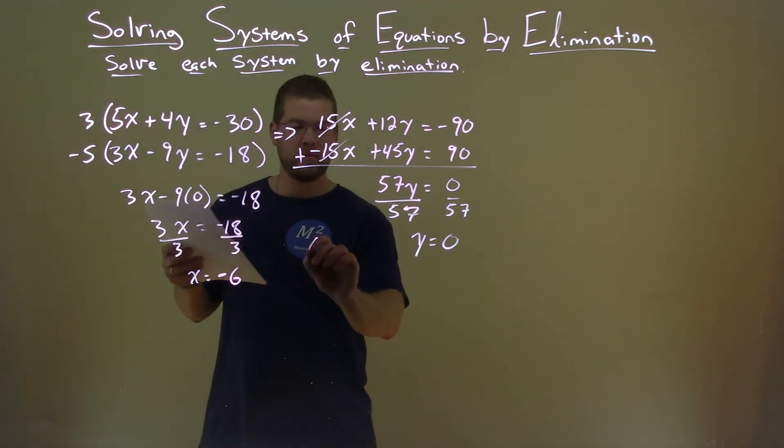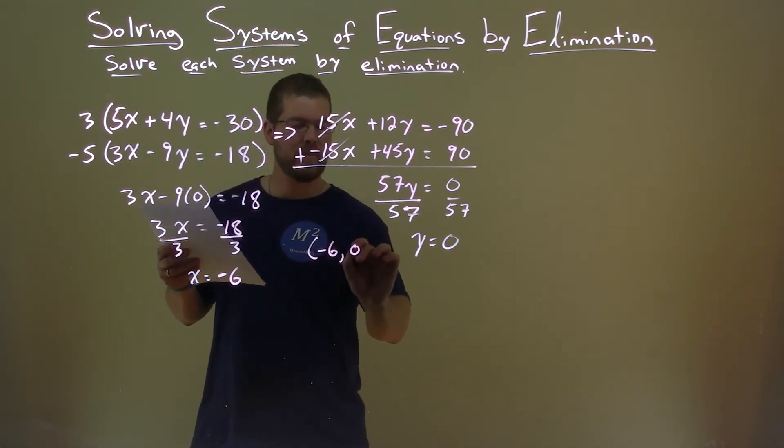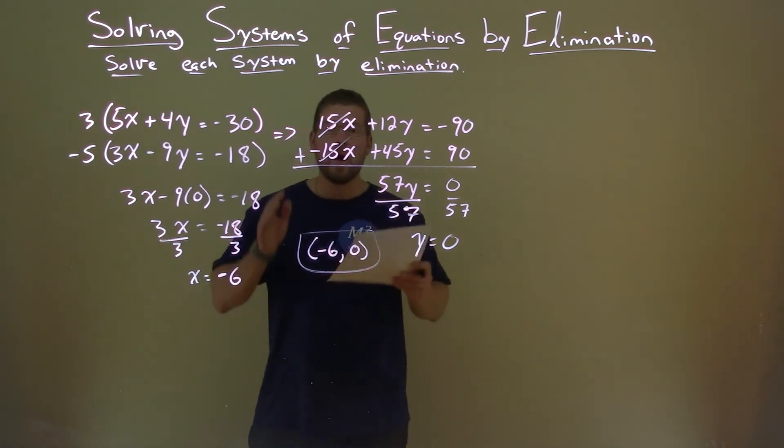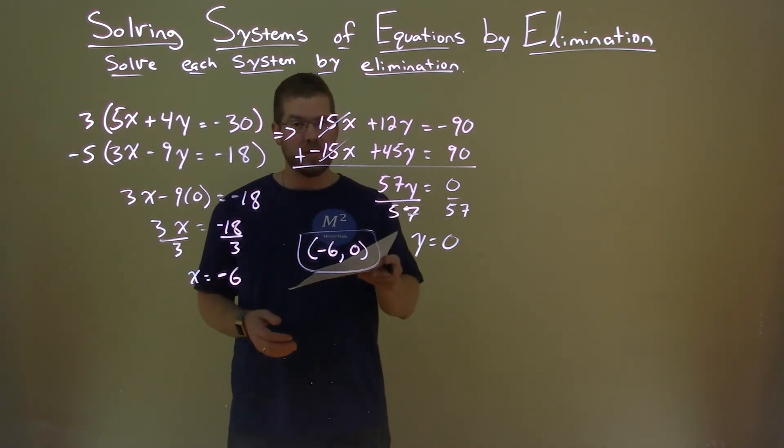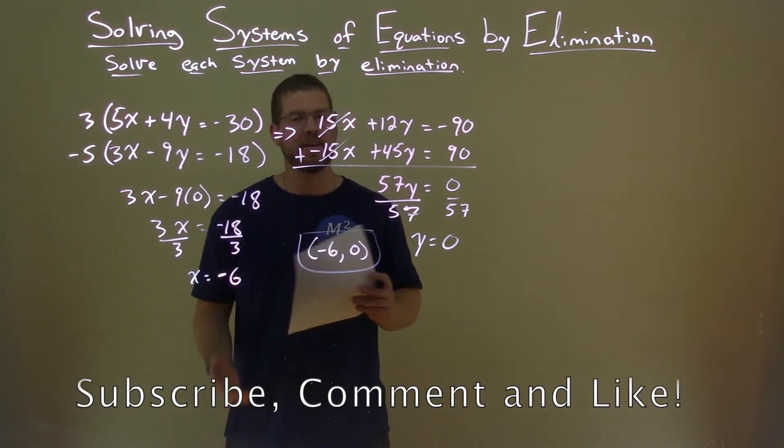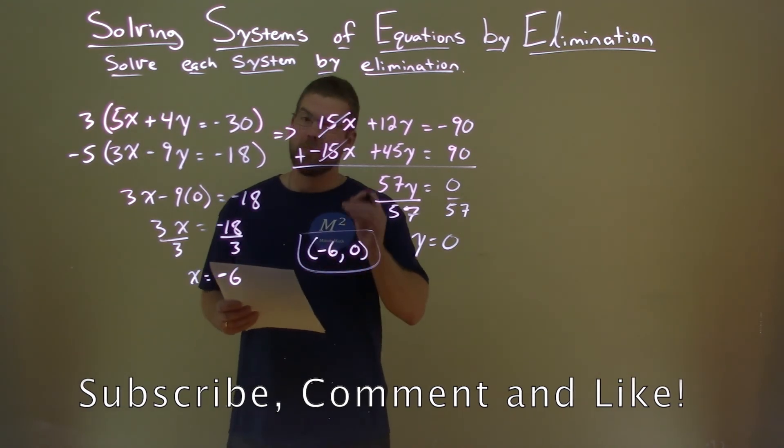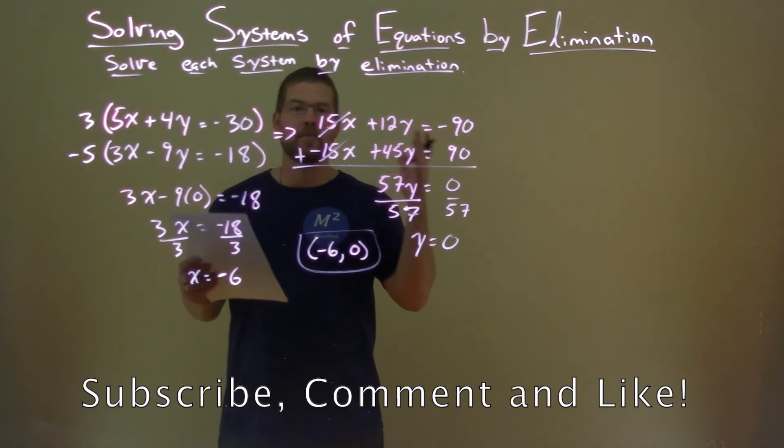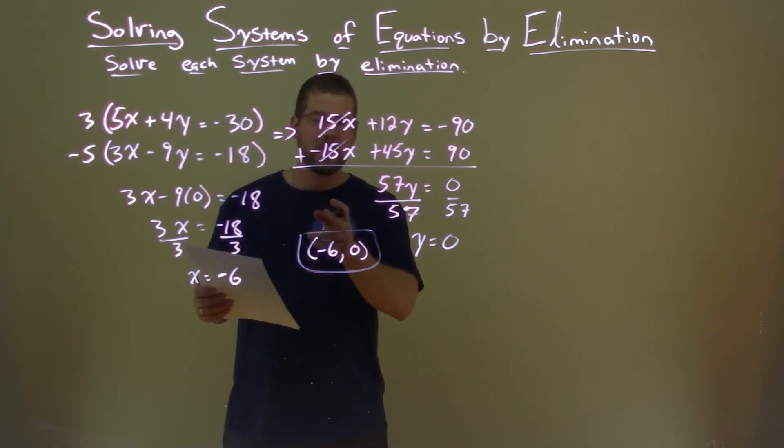So our final answer as a point, negative 6 comma 0. And there we have it. I hope you learned something from this video. If you did, please subscribe to this YouTube channel and like this video. This helps us make more free math lessons for you and for everyone else. So as always, thanks for watching.